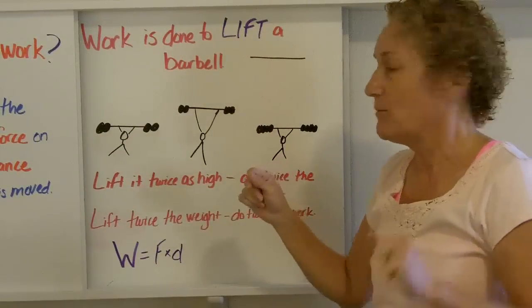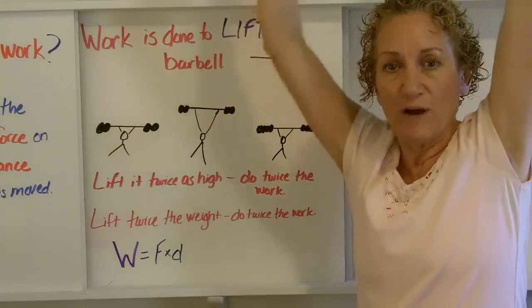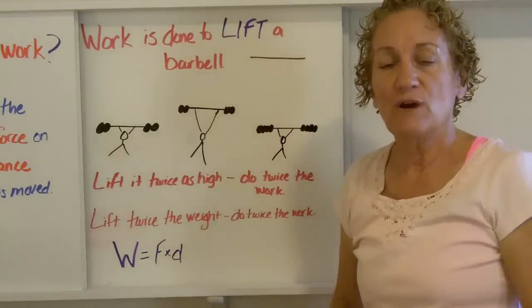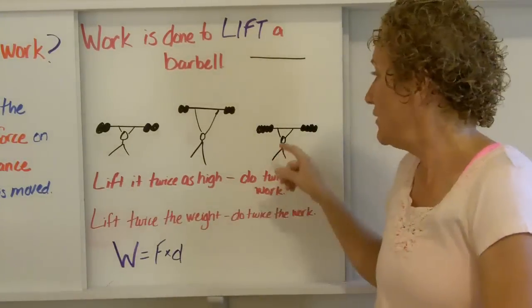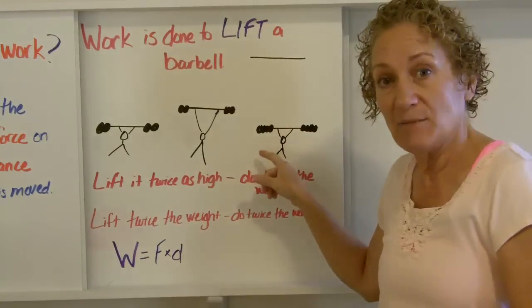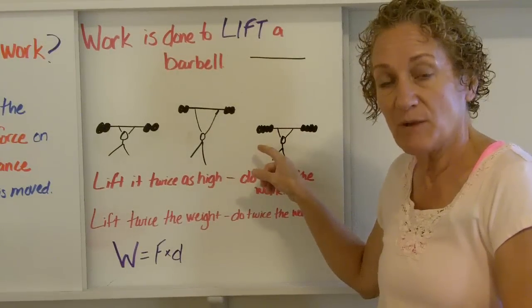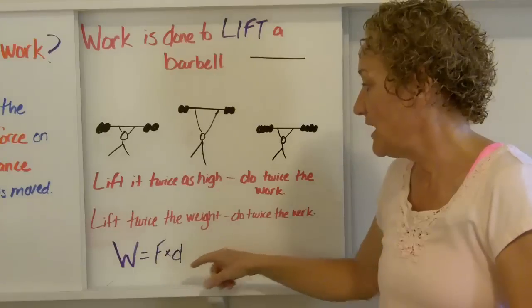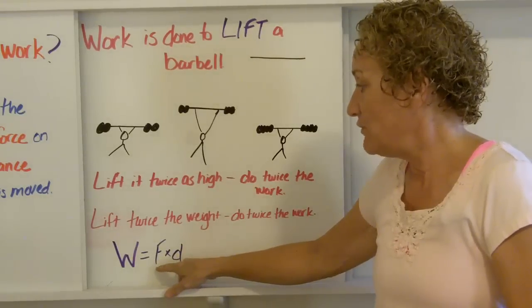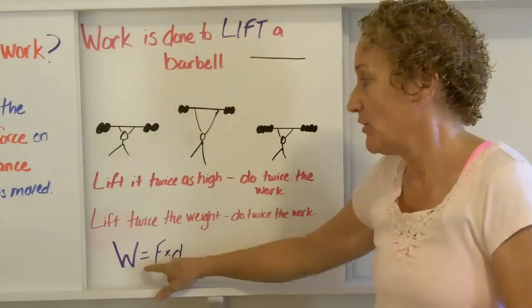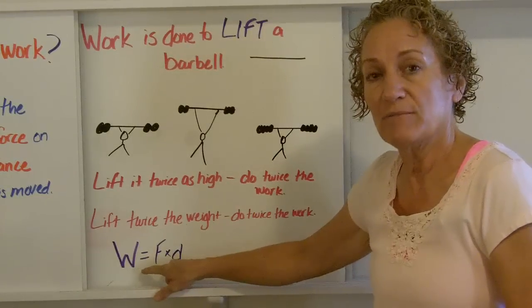Work is done to lift the barbell. Lift it twice as high, you've done twice as much work. Lift twice as much mass on the barbell, twice as much weight on the barbell, you've done twice the work. So if you double F, you double work. If you double D, you double work.